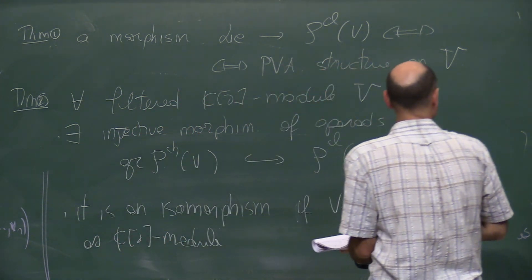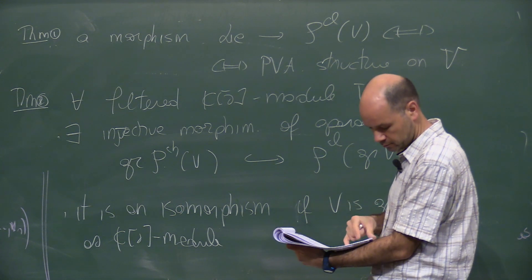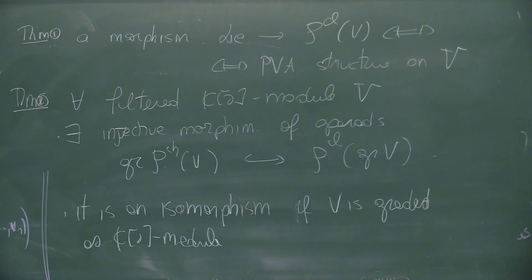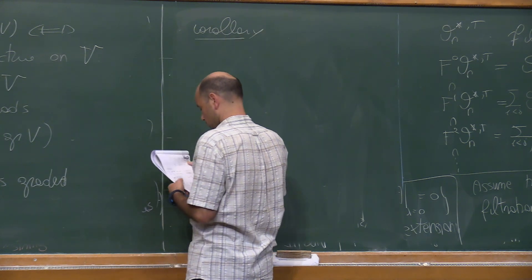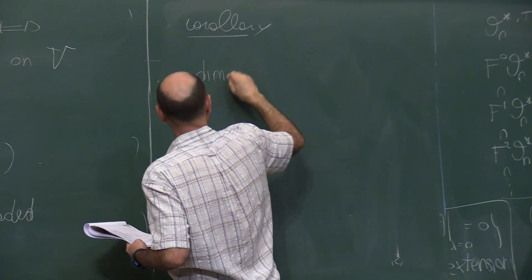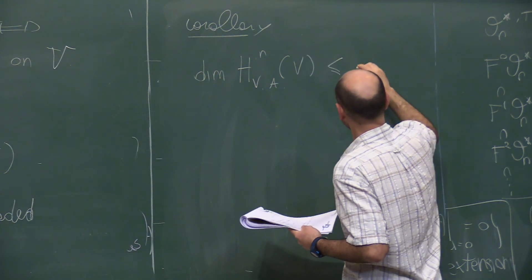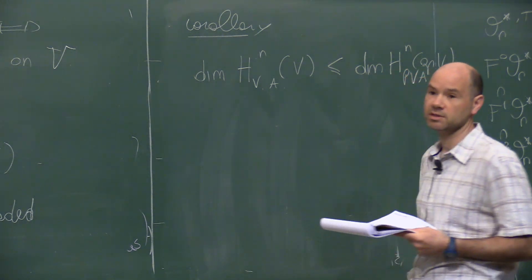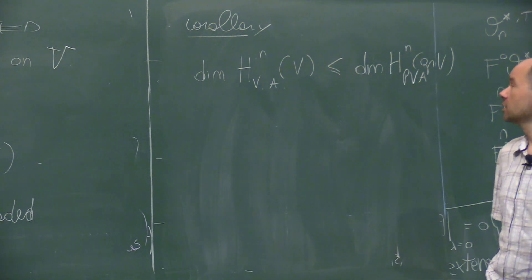Theorem 2: for every filtered C[D]-module V, there exists a canonical injective morphism of operads from the associated graded of the chiral operad of V to the classical operad of the associated graded of V, and this is an isomorphism provided V is graded as a C[D]-module. By a spectral sequence argument, we get a bound on vertex algebra cohomology given by the Poisson vertex algebra cohomology.